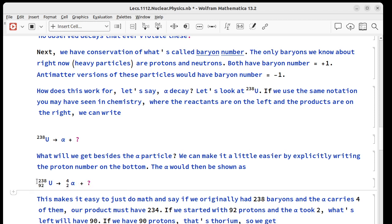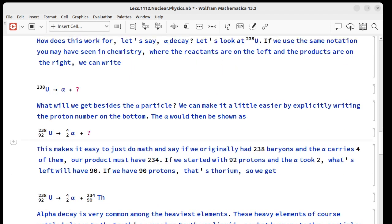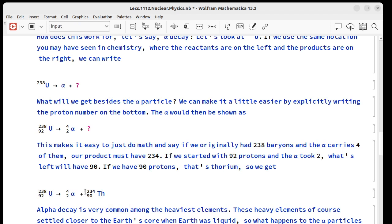So what's left? It's got to be something that has 238 minus 4, which is 234 baryons, and 92 minus 2, which is 90 protons. 90 protons is thorium, so what this means is the only thing it can decay into is thorium-234. Remember, the 4 and the 234 together give us 238. 90 plus 2 gives us 92.